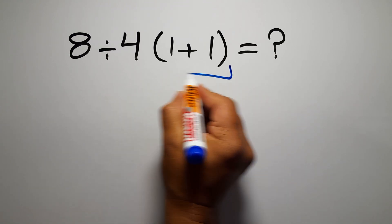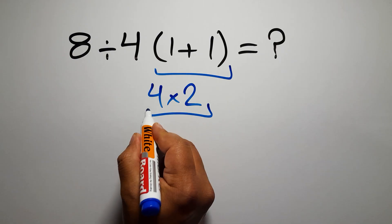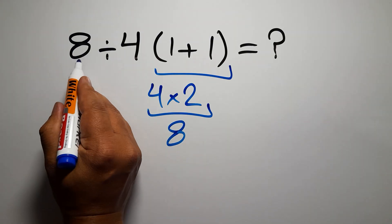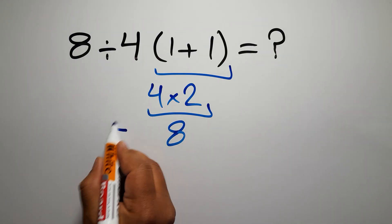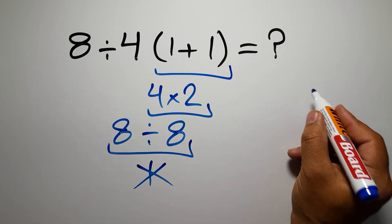1 plus 1 equals 2, and 4 times 2 is just 8. 8 divided by this, 8 divided by 8 equals 1. But this answer is not correct, because according to the order of operations,